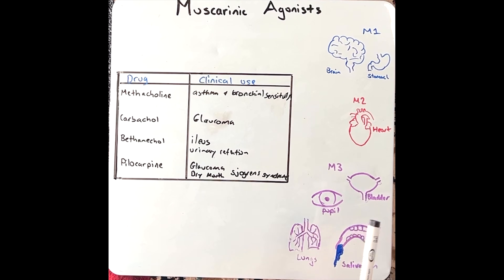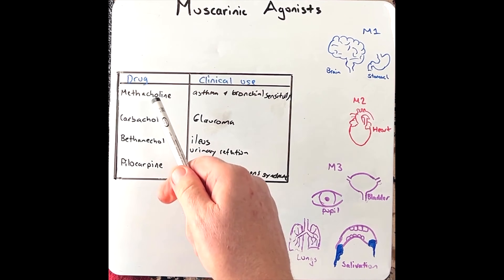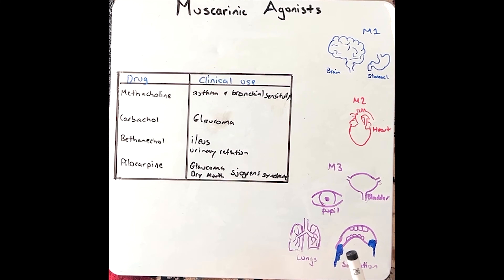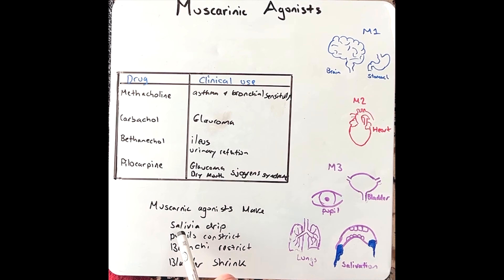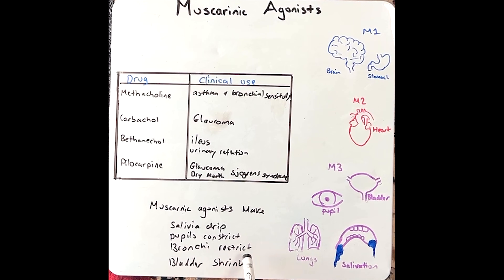A final mnemonic to help you remember the actions of these drugs: muscarinic agonists make saliva drip, pupils constrict, bronchi restrict, and bladder shrink.